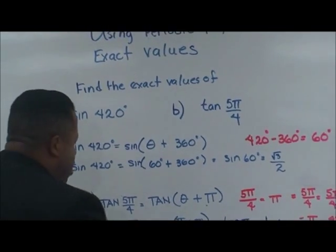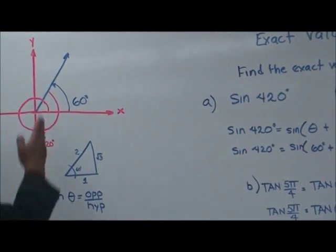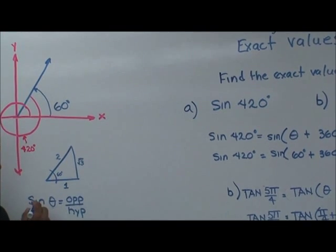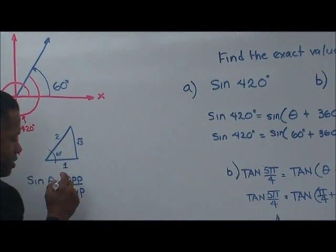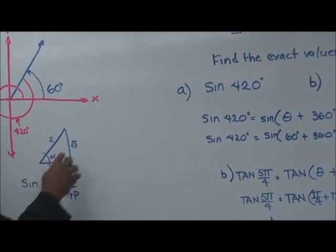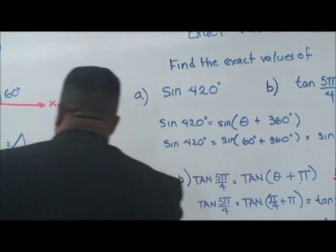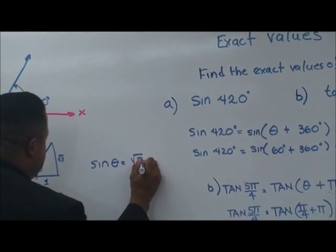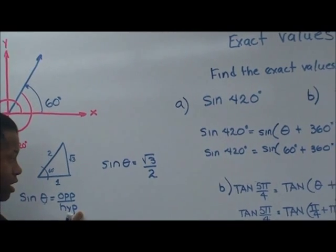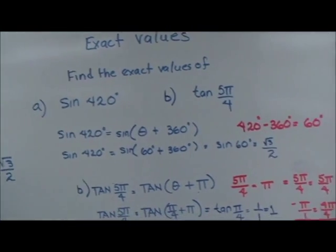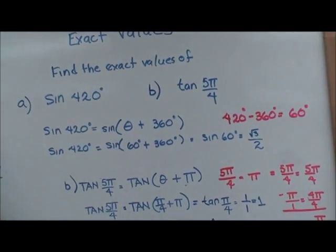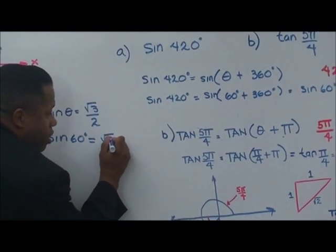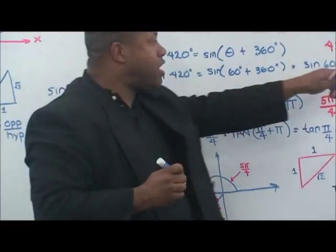We have our triangle, and we can actually make a triangle from the unit circle. We have 60 degrees, so sine theta equals opposite over hypotenuse. We take the square root of 3 over 2, because it's opposite over hypotenuse. So sine theta — that is, sine 60 — is going to equal square root of 3 over 2.